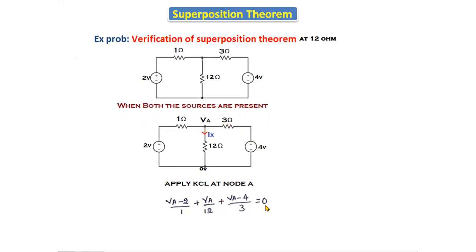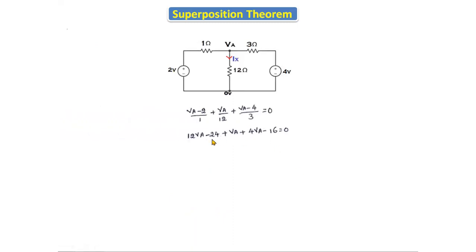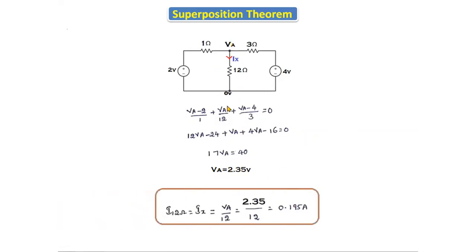...plus va divided by 12, plus (va minus 4) divided by 3, equals 0. After taking the LCM and simplifying, we get 12(va minus 24) plus va plus 4(va minus 16) equals 0, giving 17va equals 40, so va equals 40/17, which is approximately 2.35 volts. The current ix through the 12 ohm resistor is va divided by 12, which equals 2.35 divided by 12, giving 0.195 amperes.